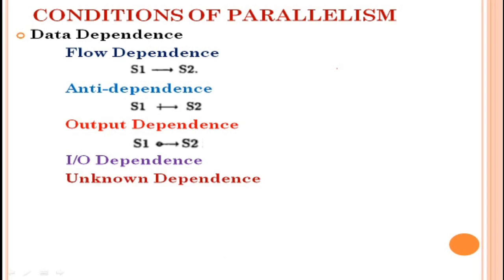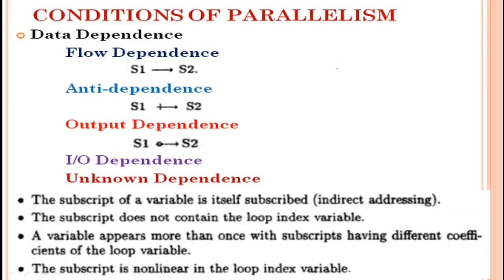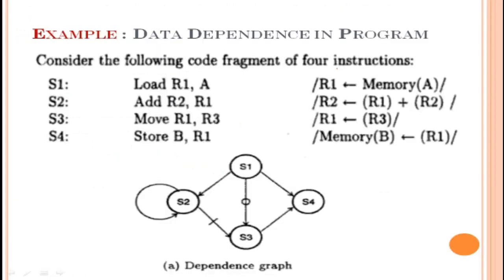The last type is unknown dependence. The dependency relationship between two statements S1 and S2 cannot be determined in the following situations: if the subscript of a variable is itself subscripted (indirect addressing); if the subscript does not contain the loop index variable; if a variable appears more than once with subscripts having different coefficients of the loop variable; or if the subscript is non-linear in the loop index variable.